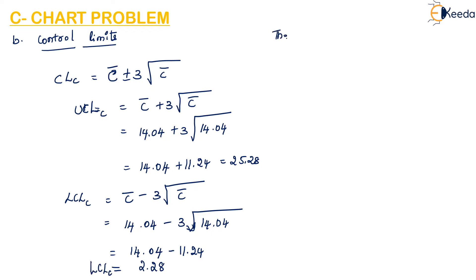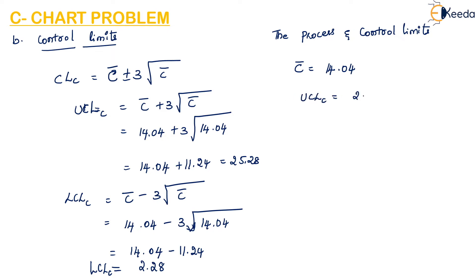So the process average and control limits are: C-bar equals 14.04, the Upper Control Limit for C is 25.28, and the Lower Control Limit for C is 2.80.